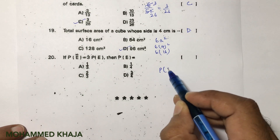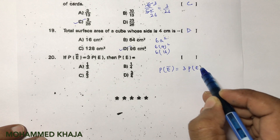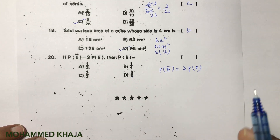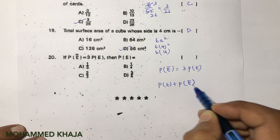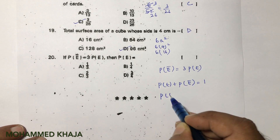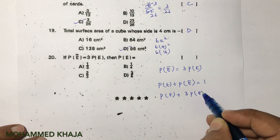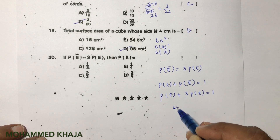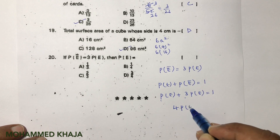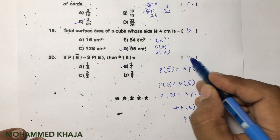Probability of a not-event is 3 times the probability of the event. Using P(E) + P(not E) = 1: P(E) + 3·P(E) = 1, so 4·P(E) = 1, giving P(E) = 1/4. The correct option is B.